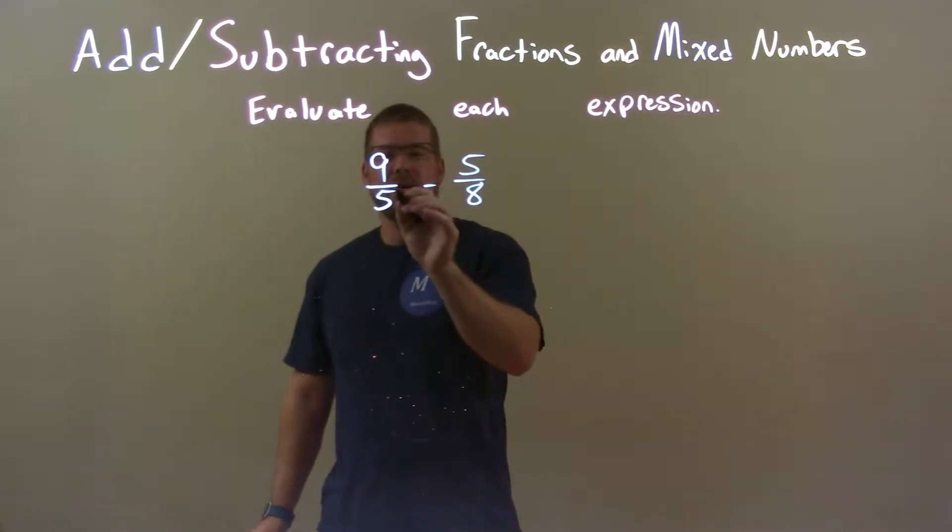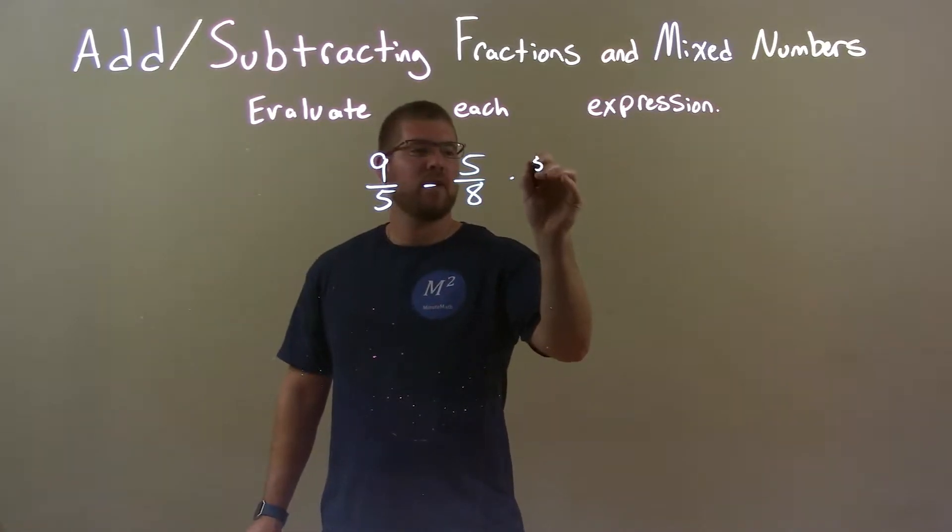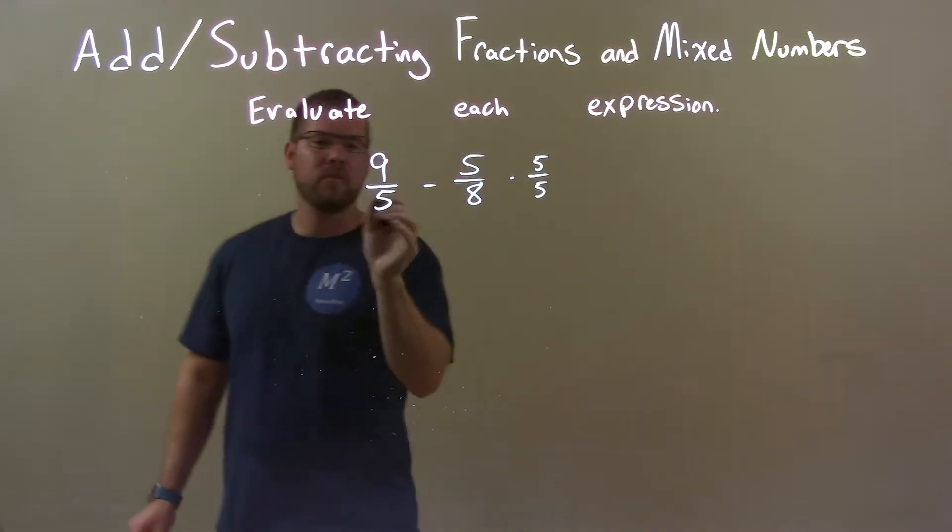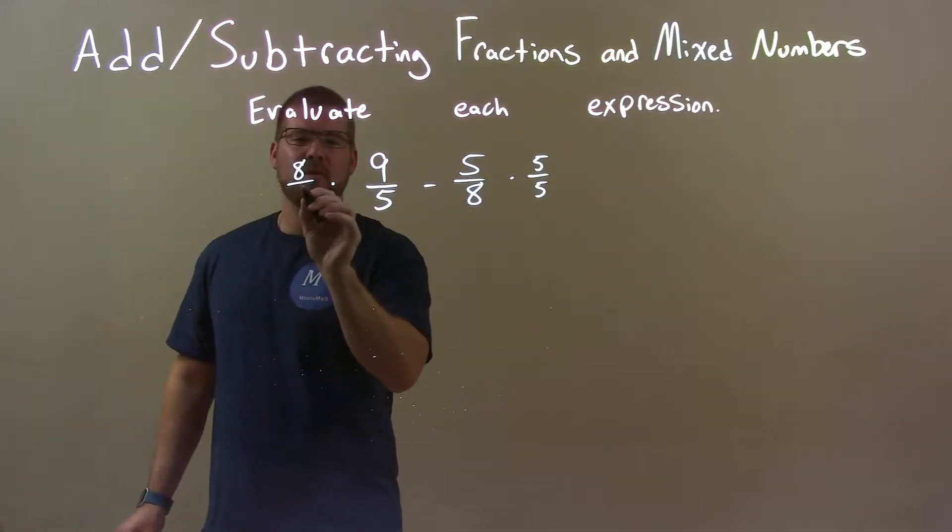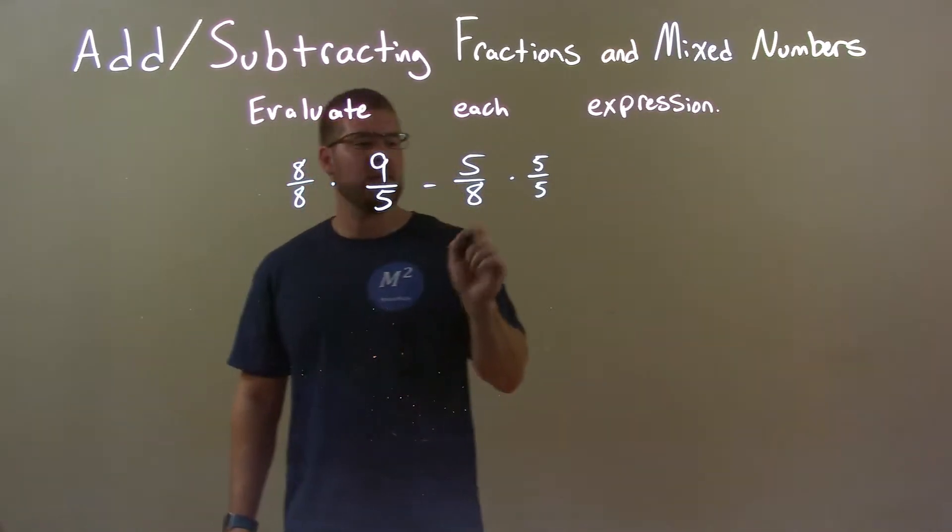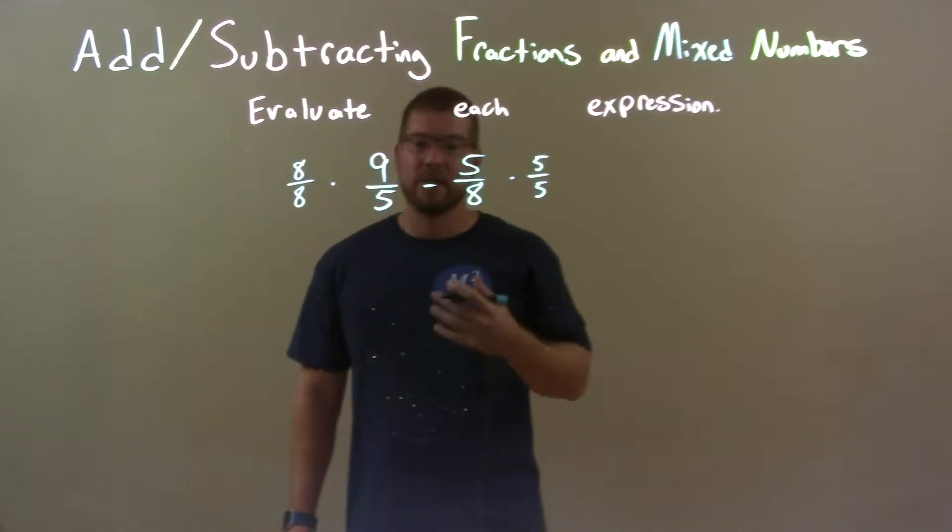Well, what I want to do is take the denominator here, that's 5, and multiply the second number by 5 over 5. And then the 8 here, this denominator, multiply the first number by 8 over 8. And what this does, this will allow us to have a common denominator, 8 times 5, which then allows us to add or subtract this fraction.